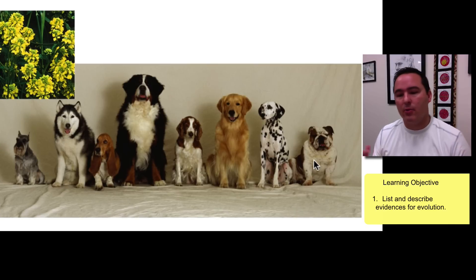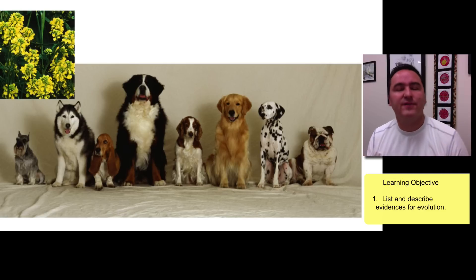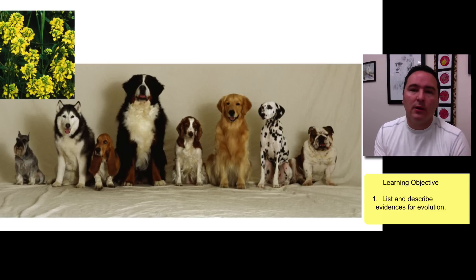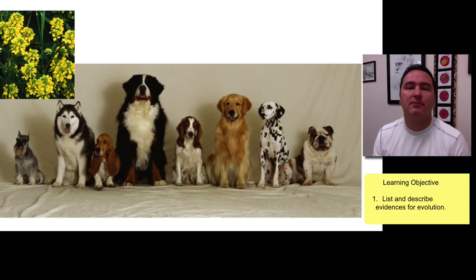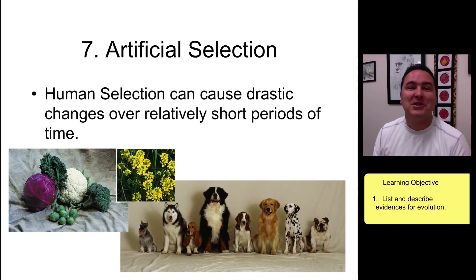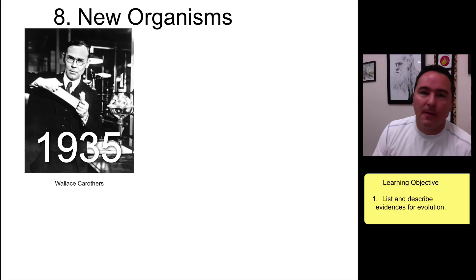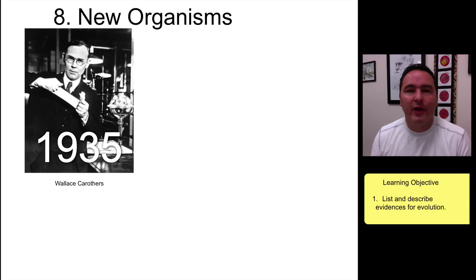The same story is true for dogs. Dog breeders asked: do you want one that can hunt, one that can get into holes, one that runs fast? Breeders have been doing this for a long time, originally to help humans perform useful functions, but more recently just for appearance or to fit in a purse.